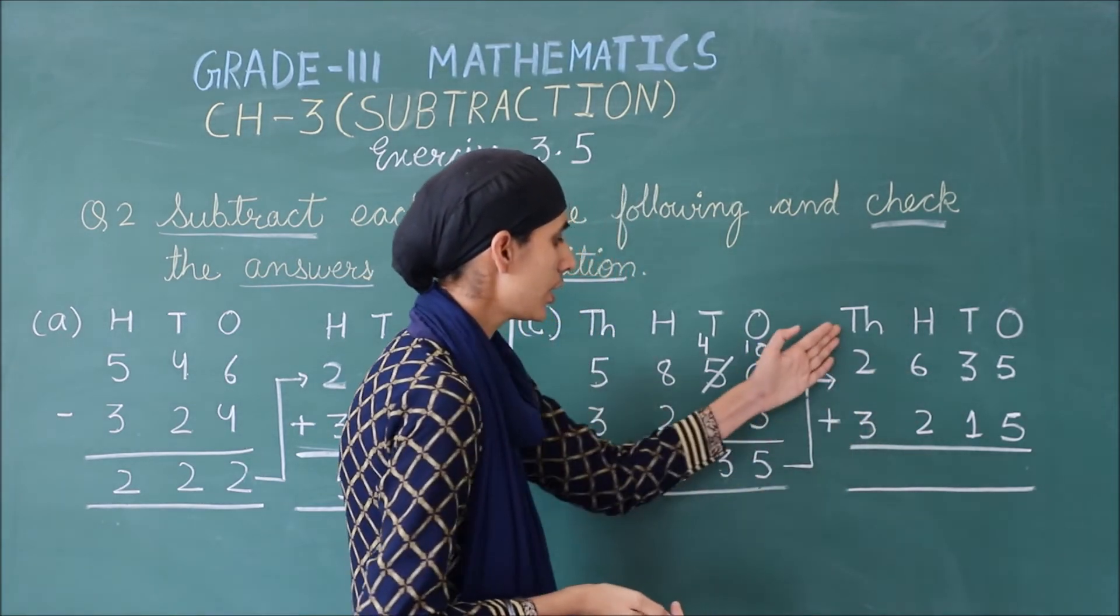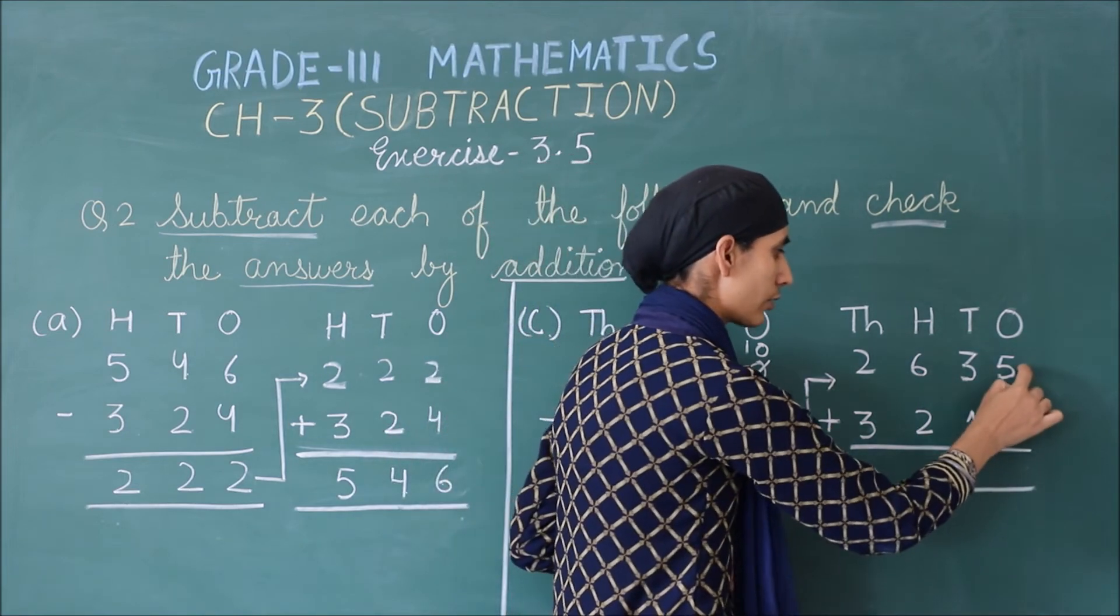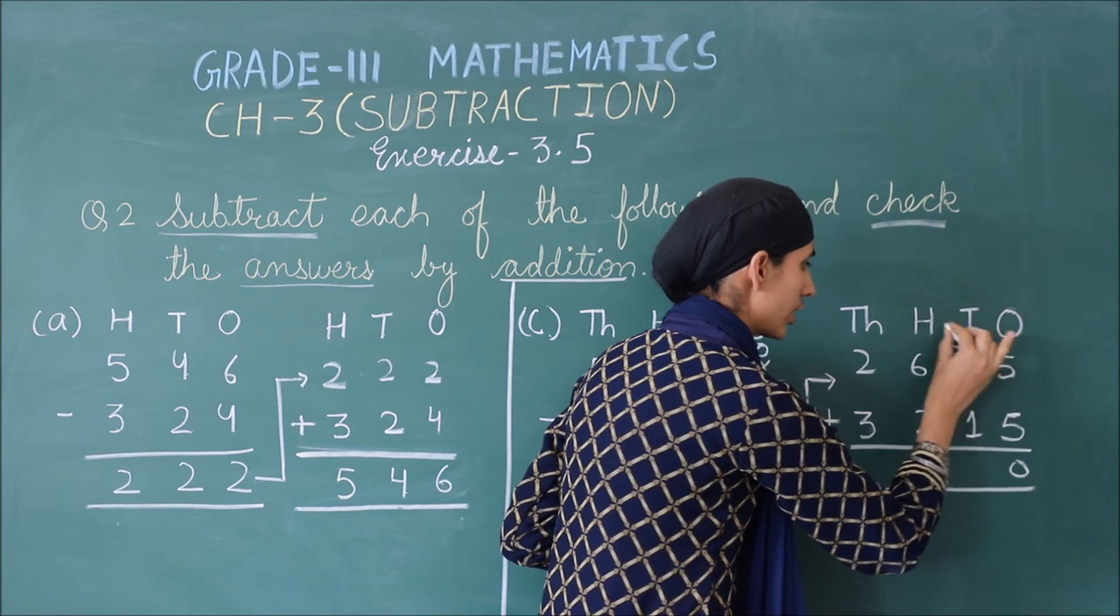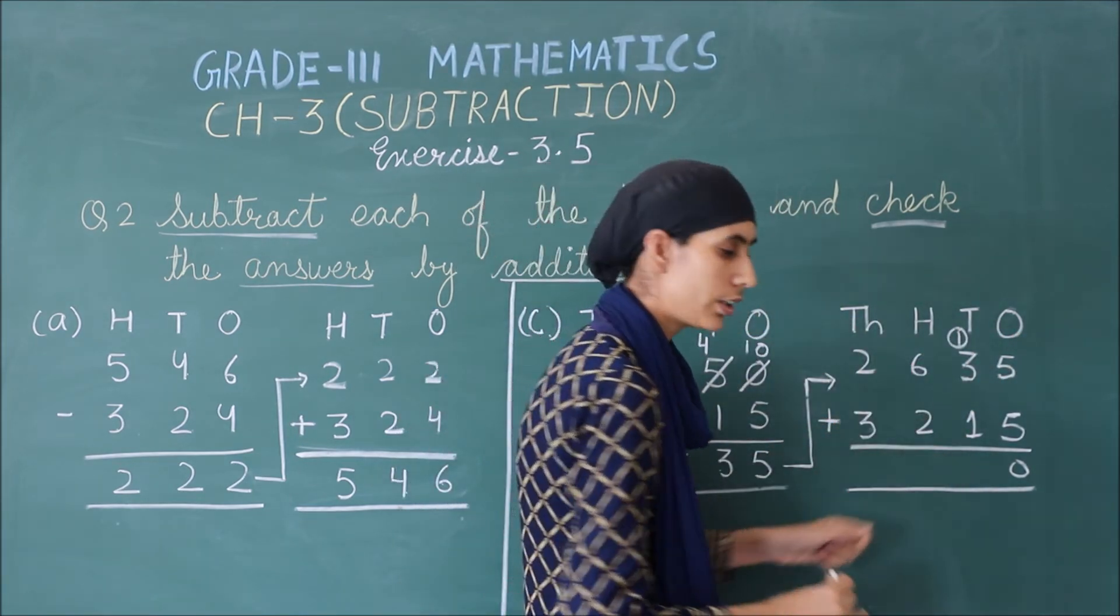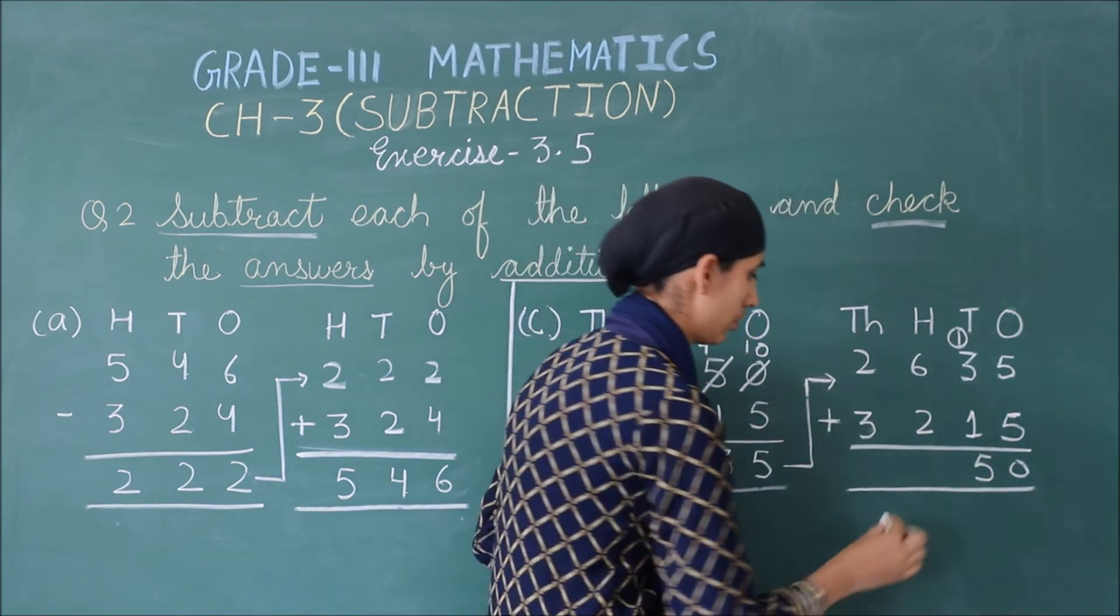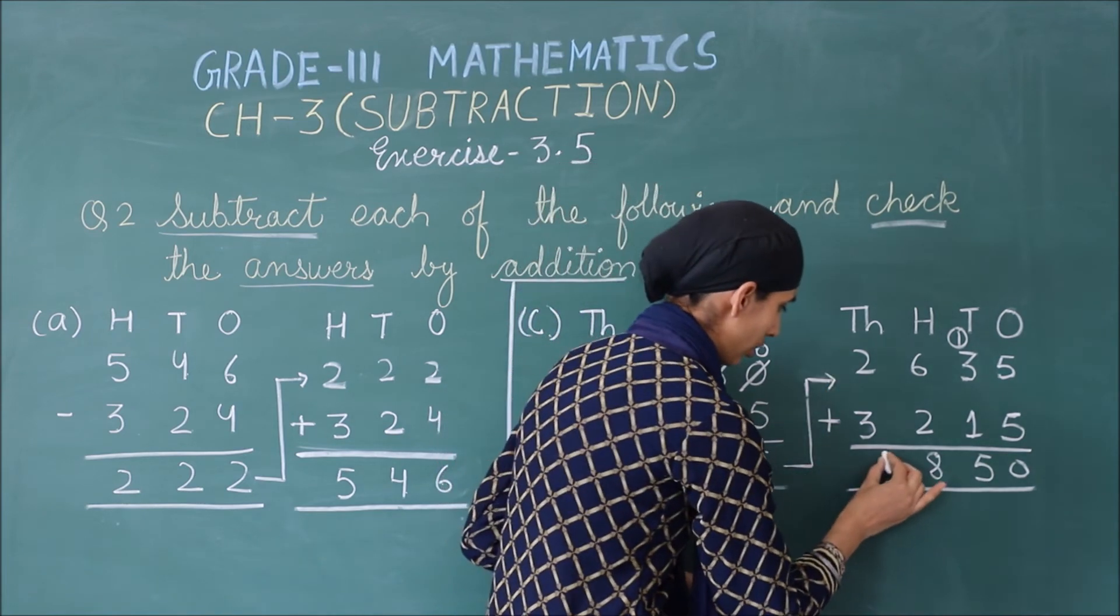Now what is our symbol here? Addition, so we add them. 5 plus 5 is 10, so 0 here, and 1 carry. 3 plus 1, 4. 4 plus 1, 5. 6 plus 2, 8. 2 plus 3, 5.